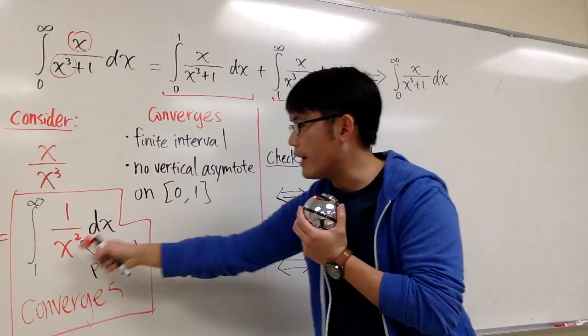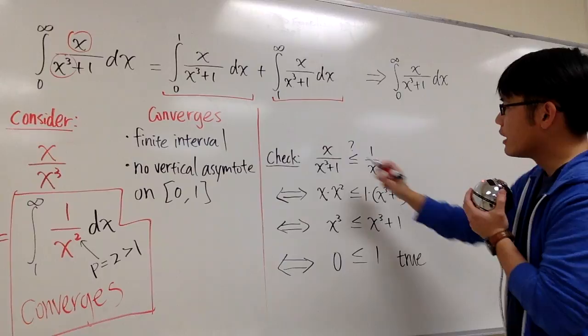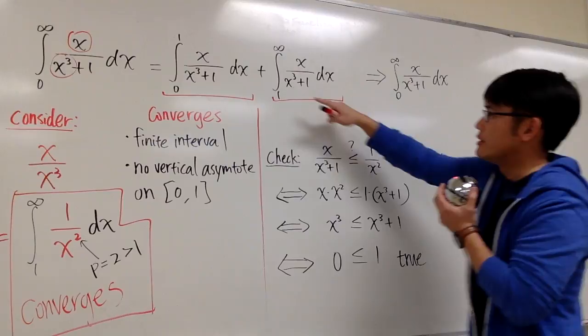So I want to check: is x over x to the third power plus 1 less than or equal to 1 over x squared? I'll verify this inequality for x greater than or equal to 1, since that's all we care about from 1 to infinity.